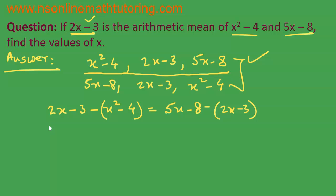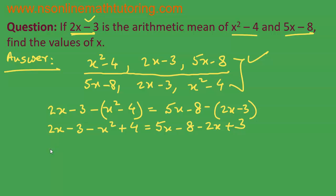Opening the parentheses: 2x minus 3 minus x squared plus 4 is equal to 5x minus 8 minus 2x plus 3. Taking all terms to one side and making the other side zero, with a positive sign on x squared: x squared minus 2x plus 3x minus 1 plus 5x minus 2x, and minus 8 plus 3 is minus 5, all equal to zero.